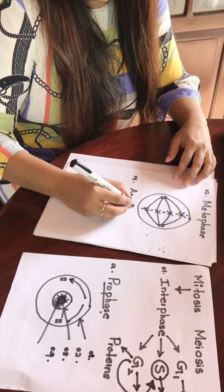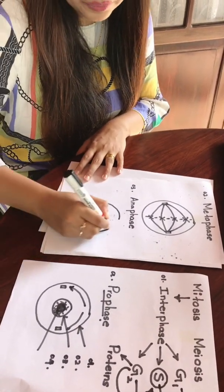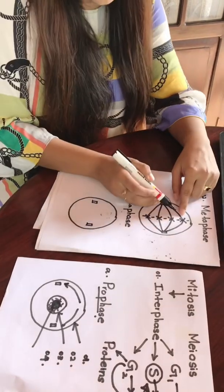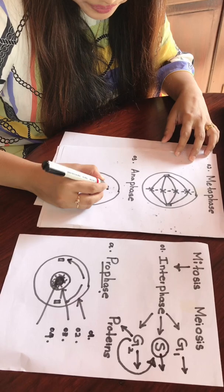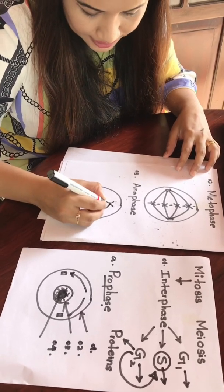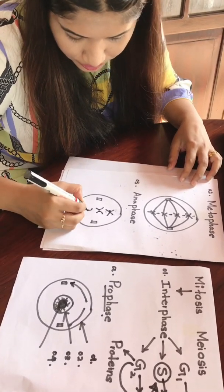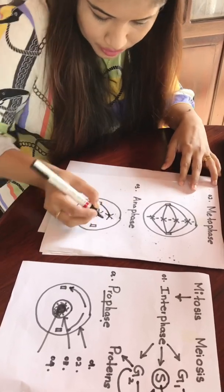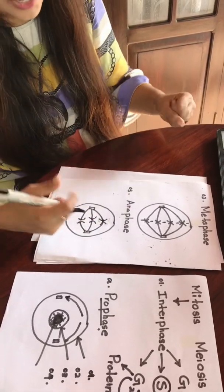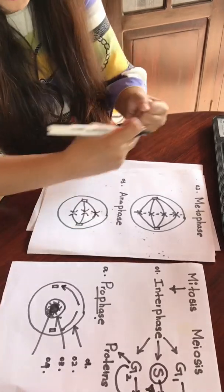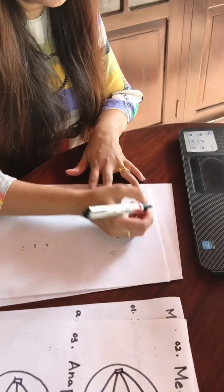Now the third phase is anaphase. In anaphase, the fibers start stretching and pulling the separate sister chromatids toward different poles. We can then move into the fourth phase, which is telophase.